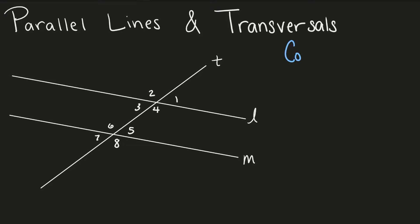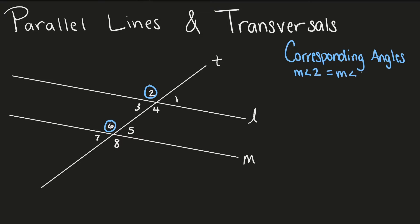Let's start with corresponding angles. Angles that are on the same side of the transversal and on the same side of the parallel lines are corresponding angles. Angle 2 and angle 6 are both on top of the parallel line and to the left of the transversal, so they are corresponding and they're congruent. Another example of corresponding angles would be angle 4 and angle 8.